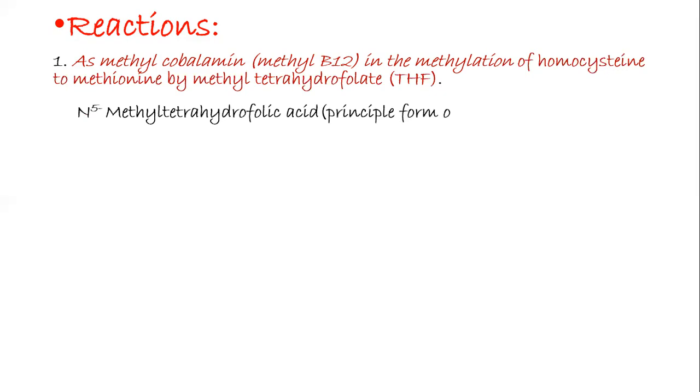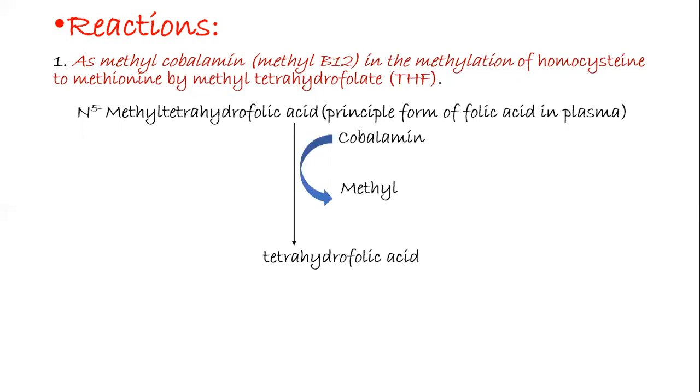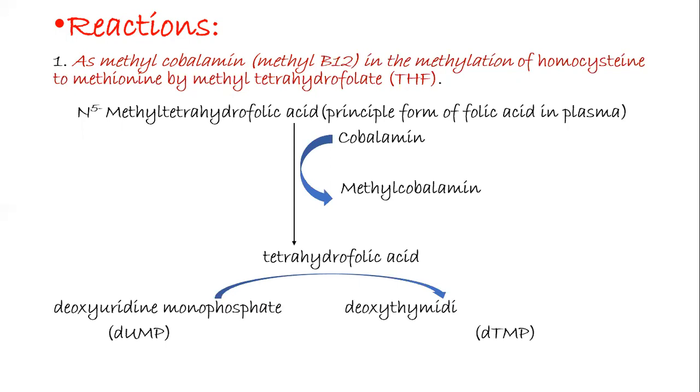N-methyl tetrahydrofolic acid is the principal form of folic acid in the plasma. It gives off its one methyl group to methylcobalamin. Hence N-methyl tetrahydrofolic acid is converted to tetrahydrofolic acid because the methyl group is donated to cobalamin to form methylcobalamin. The cobalamin takes the methyl group and gets converted into methylcobalamin. This tetrahydrofolic acid is responsible for conversion of deoxyuridine monophosphate, that is DUMP, to deoxythymidine monophosphate, that is DTMP. And this DTMP is the building block for DNA.